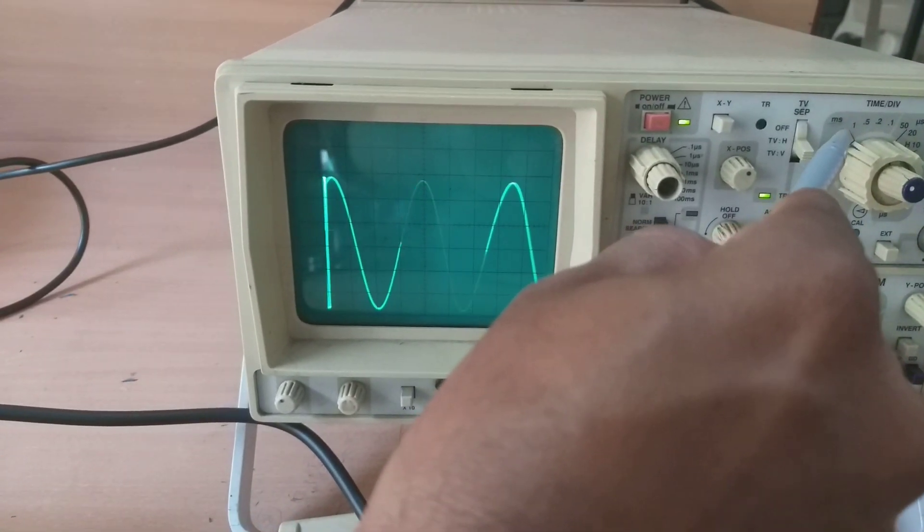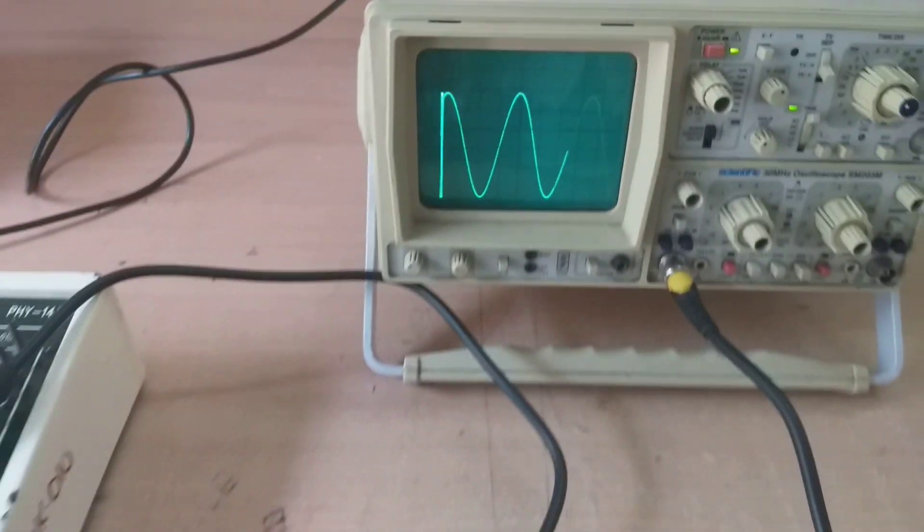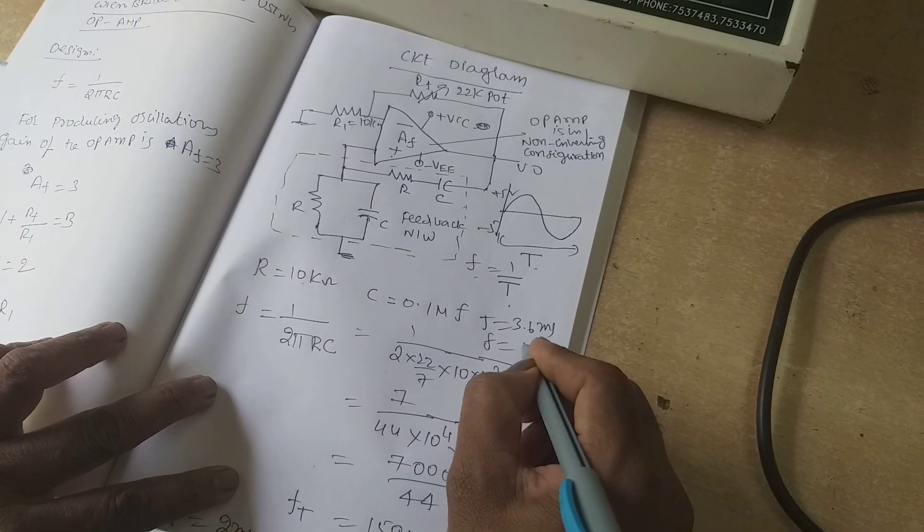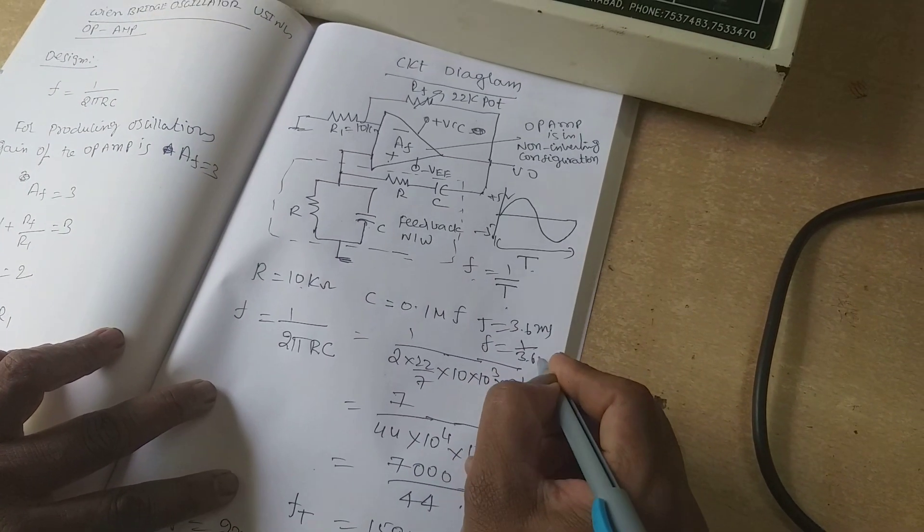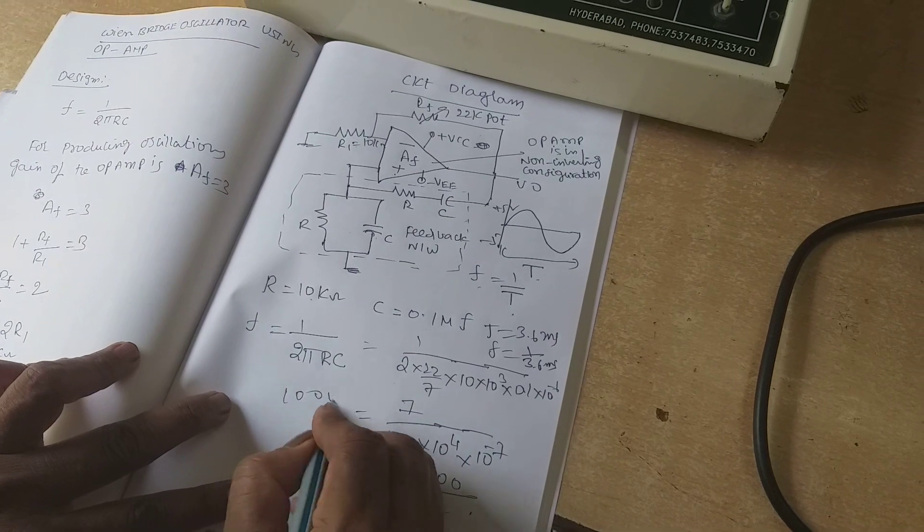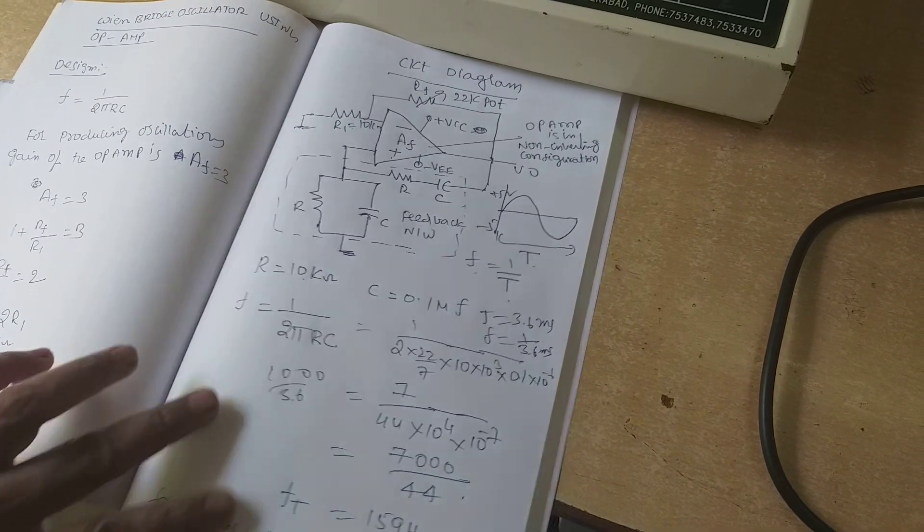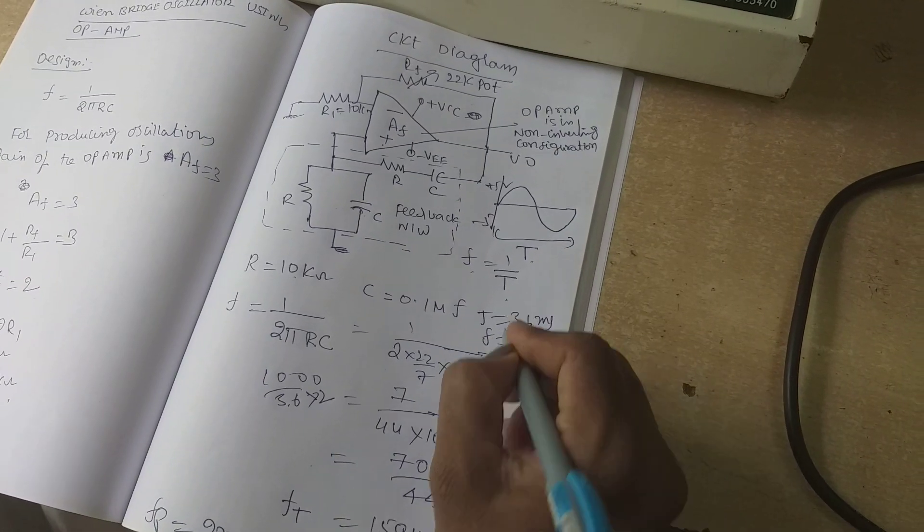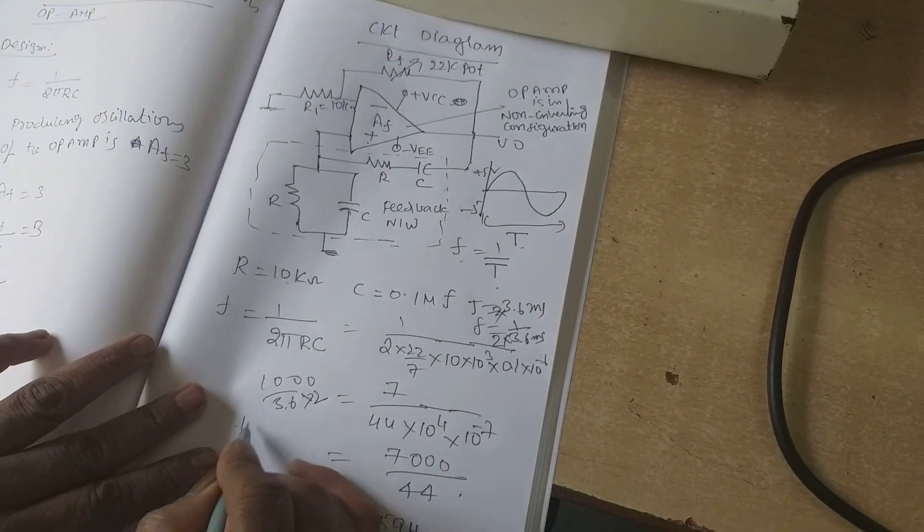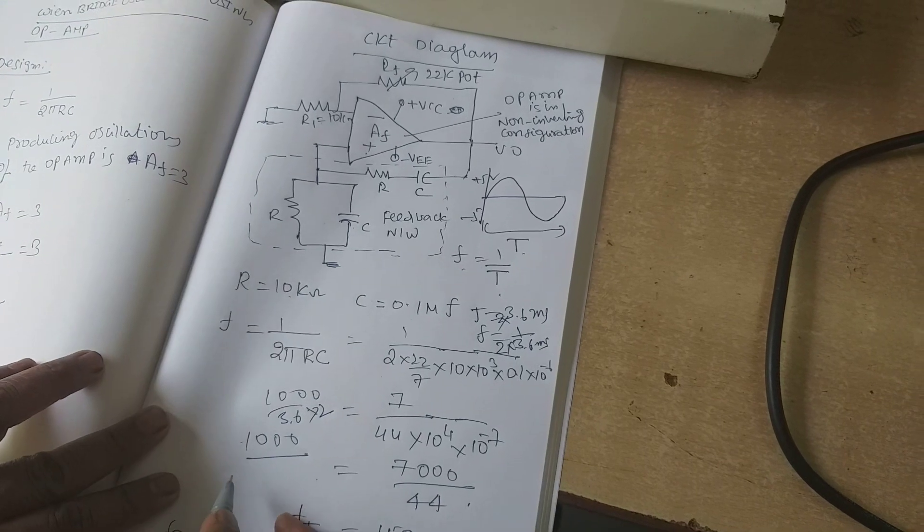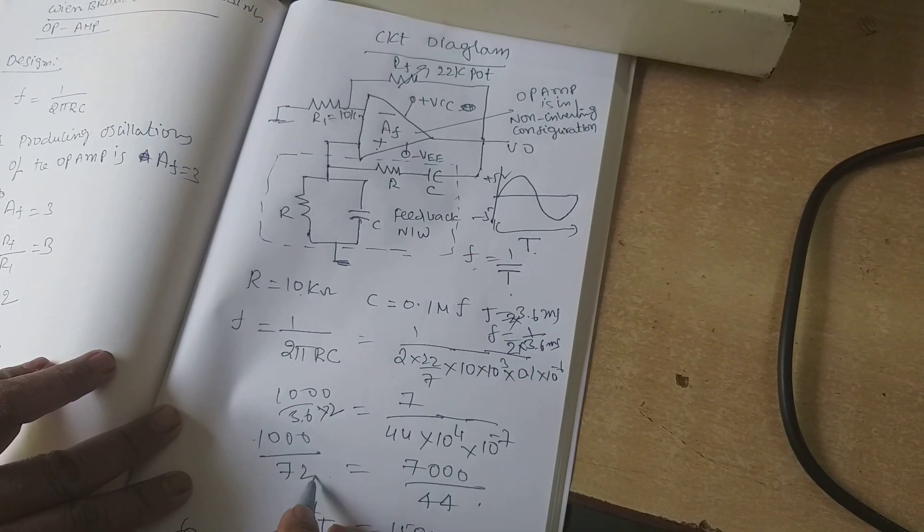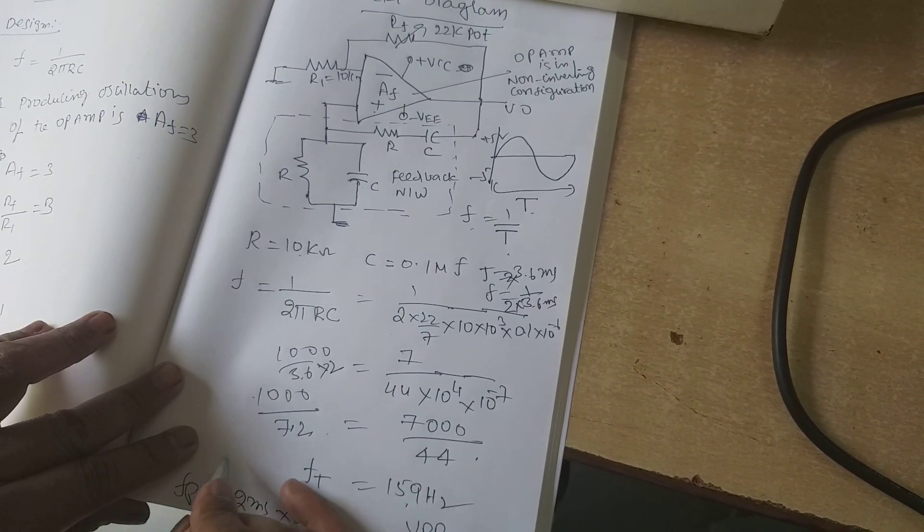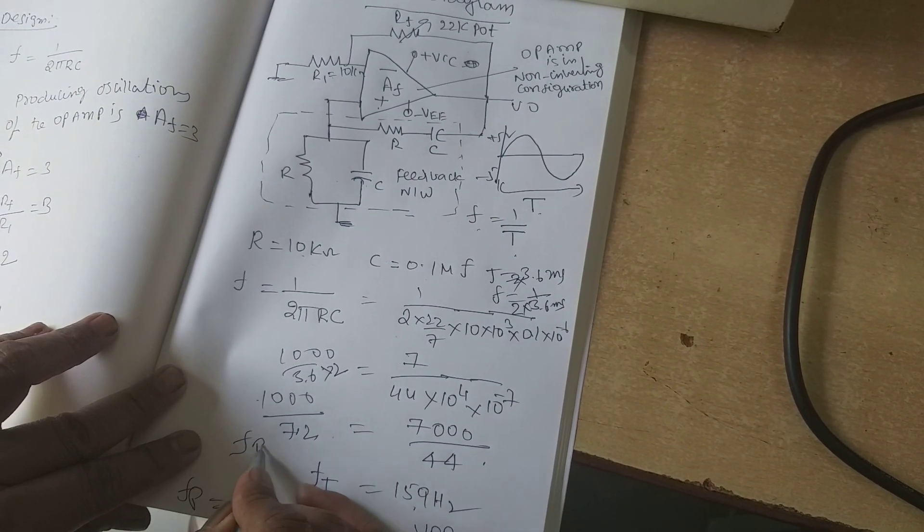F is equal to 1 by 6.4 milliseconds. That is equal to 1000 by 6.4, which gives 1000 by 6.4. We will get F practically.